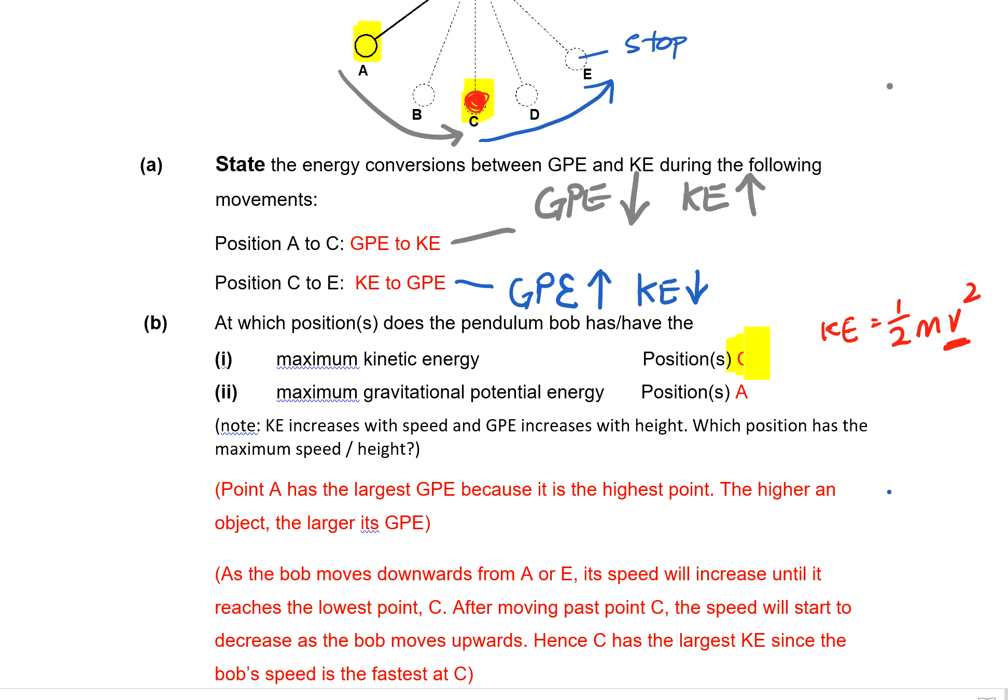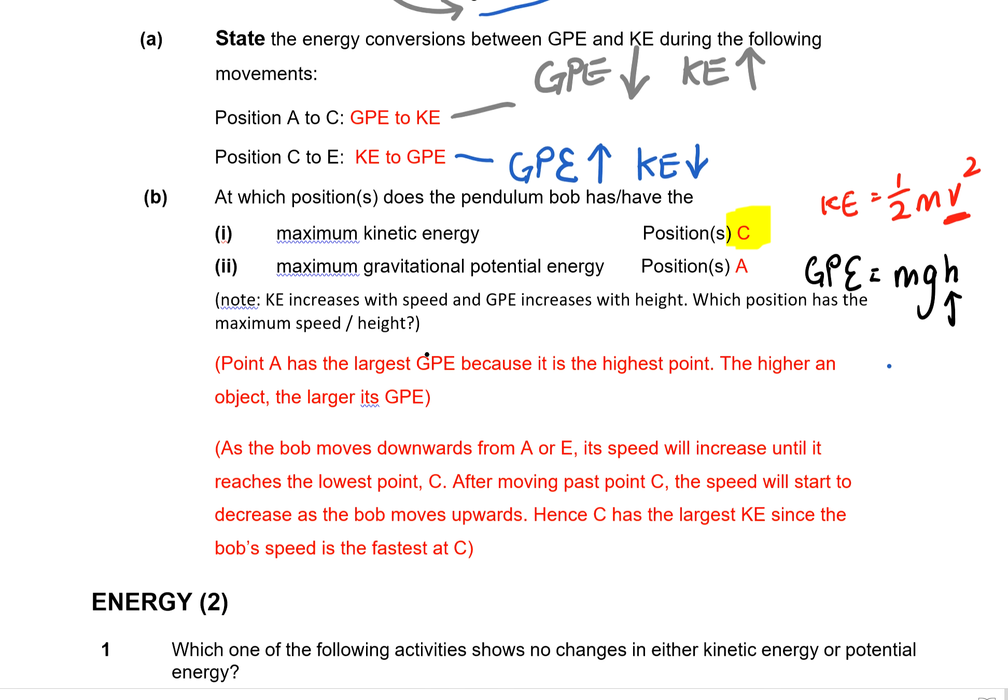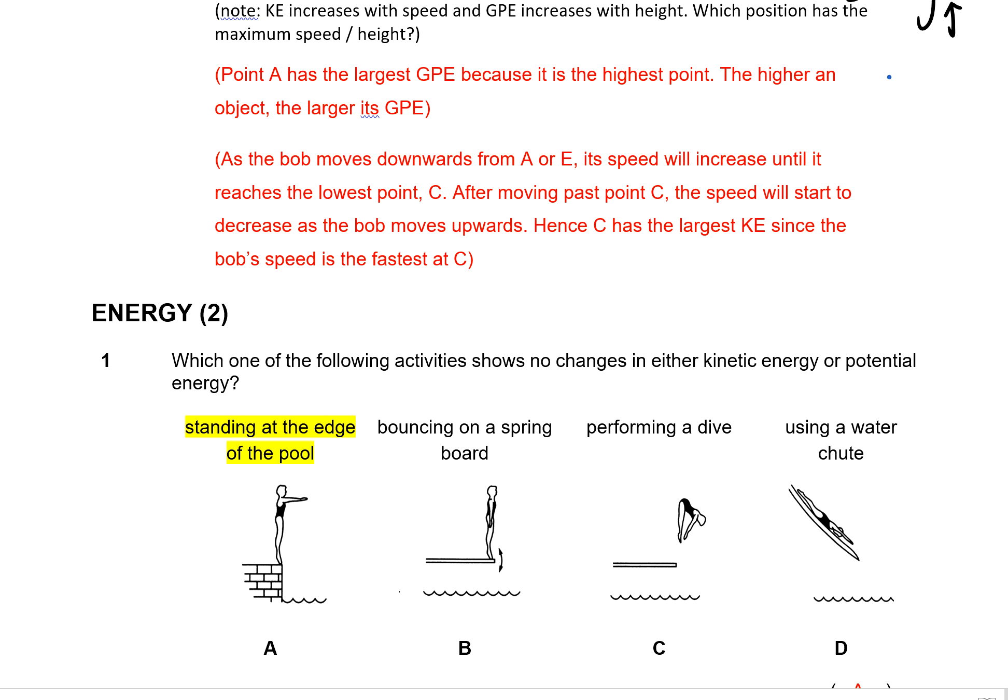Then the question is, which point does it have the greatest GPE? Let's write out the formula for GPE is MGH. So the higher the height, the larger the height, the larger the GPE. I'm going to look at this whole movement now. So the highest point seems to me like it's A. So therefore, position A has the maximum GPE.